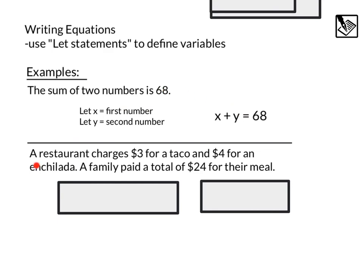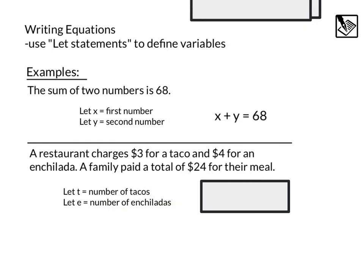Let's do one last example. A restaurant charges $3 for a taco and $4 for an enchilada. A family paid a total of $24 for their meal. So it looks like they're having the price and a total cost. So for these variables, why don't we make it let T equal the number of tacos they buy and let E equal the number of enchiladas they buy.